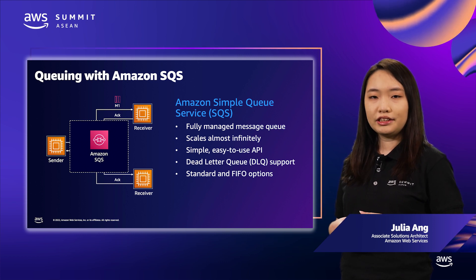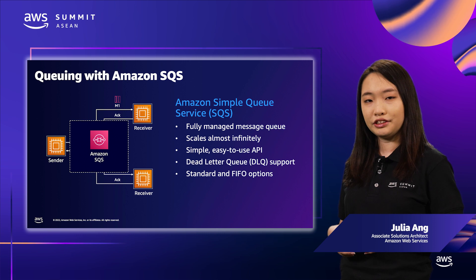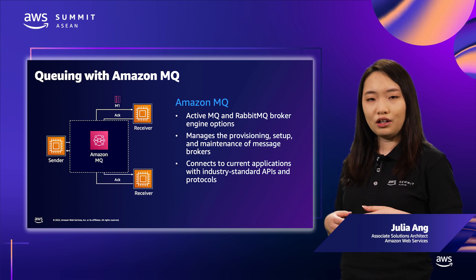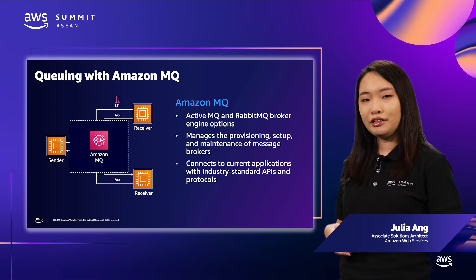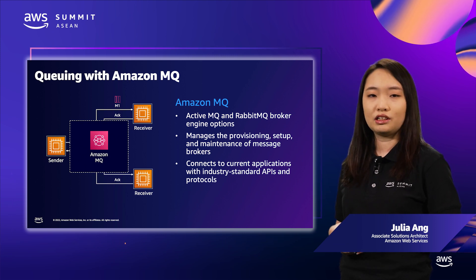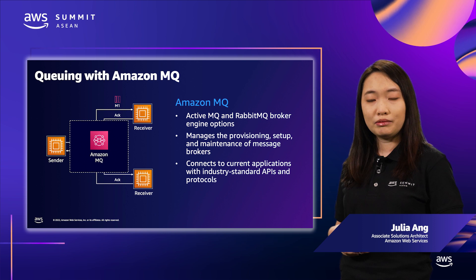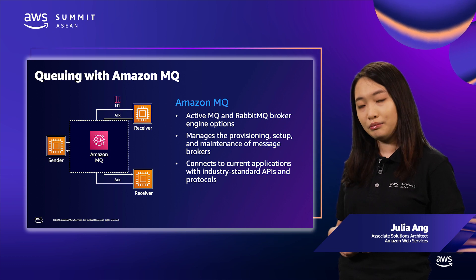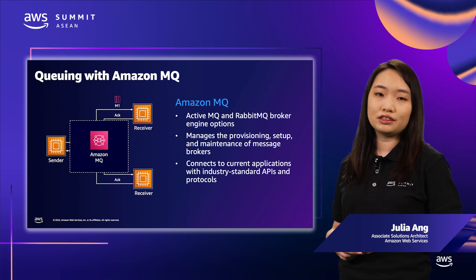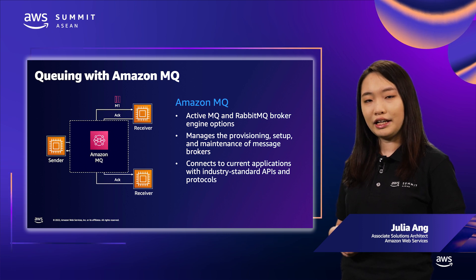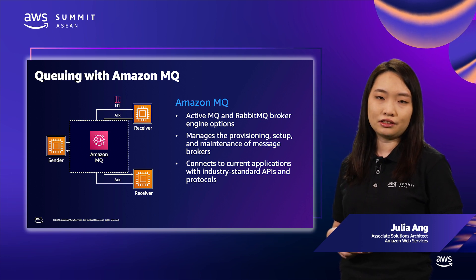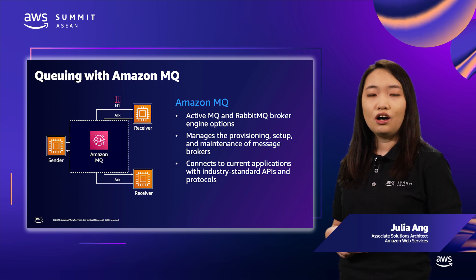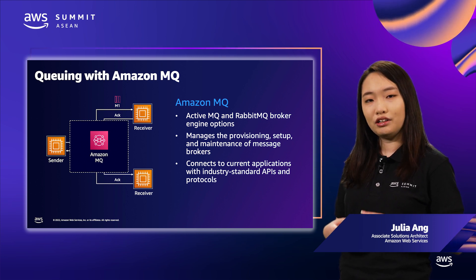We recommend using SQS for architecting point-to-point integration in applications built ground up on AWS. You also have the option of Amazon MQ, a managed message broker for two popular open source products: Apache ActiveMQ and RabbitMQ. This is a good fit if you are already self-hosting these message brokers or are migrating workloads that use industry standard APIs such as the Java Messaging Service, or JMS, to the cloud — so you can benefit from a managed service without rewriting your applications.